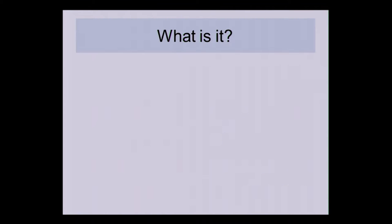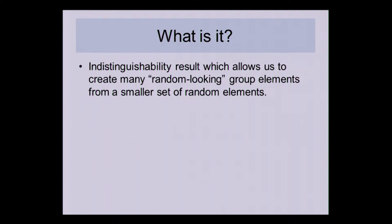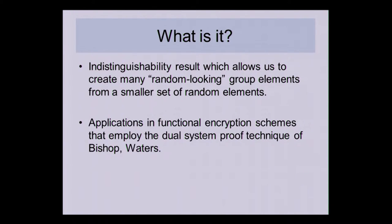I'm going to talk about a technique that's inspired by pseudorandom generators that allows us to use a small number of group elements that are random to replace a much larger number of elements that are in the public parameters of certain functional encryption schemes that employ the dual system proof technique of Boneh and Waters.